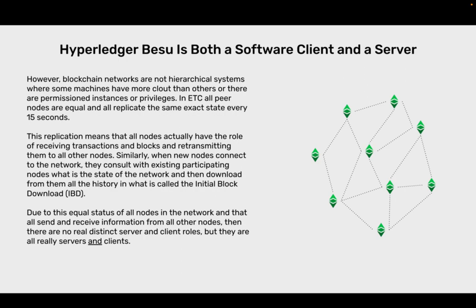Similarly, when new nodes connect to the network they consult with existing participating nodes about the state of the network and then download from them all the history in what is called the initial block download (IBD). Due to this equal status of all nodes in the network, and that all send and receive information from all other nodes, there are no real distinct server and client roles — they are all really servers and clients.